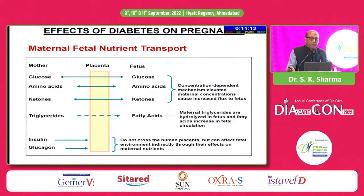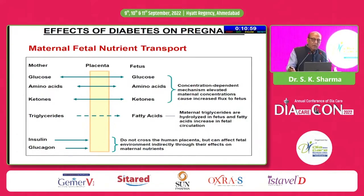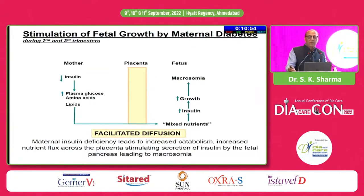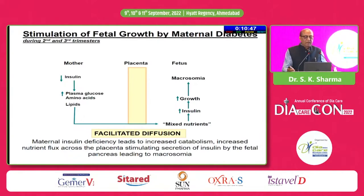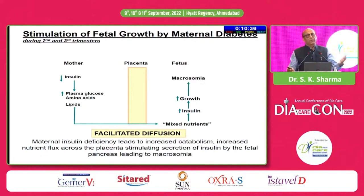Many products are transferred across the placenta — glucose, amino acids, ketones, and triglycerides are transported to the fetus. But insulin and glucagon are not transferred across the placenta. So once the mother is having hyperglycemia, there is decreased insulin but high glucose and other amino acids and lipids transferring to the fetus. This leads to increased insulin secretion from the fetal pancreas.